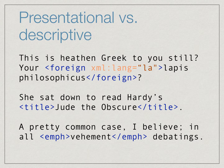Descriptive or semantic markup attempts to describe the identity or function of parts of the document. For instance, the newer HTML5 tags — article, nav for navigation, and footer — identify the text by its function rather than its appearance.